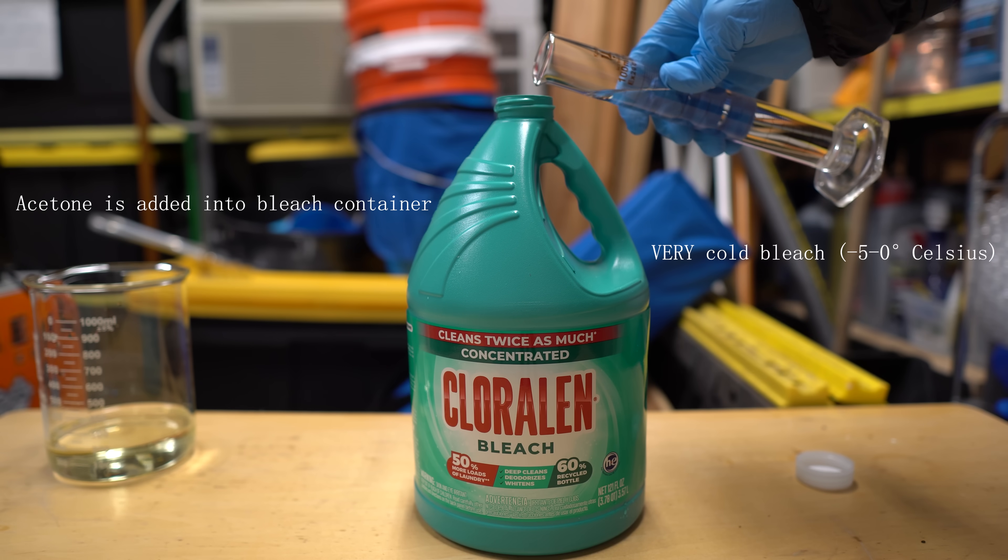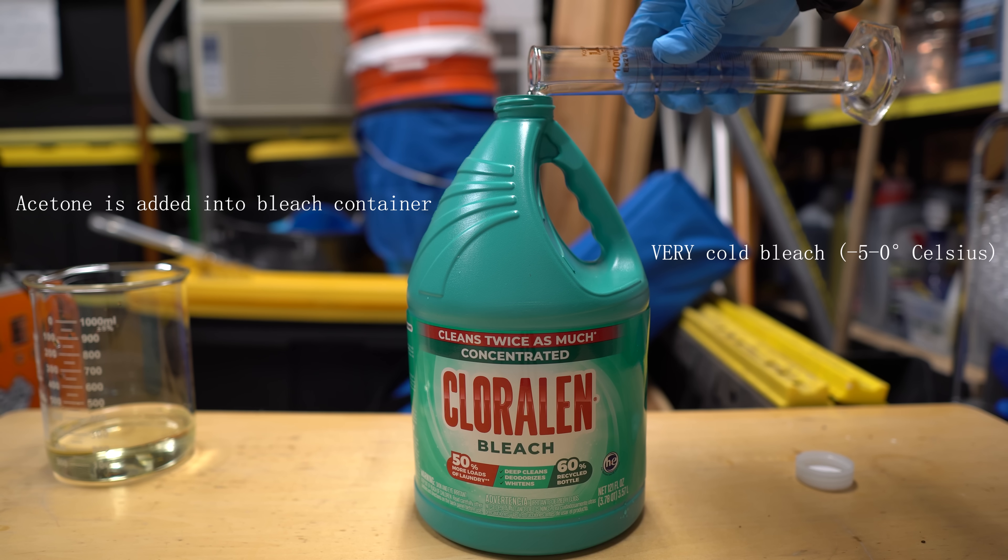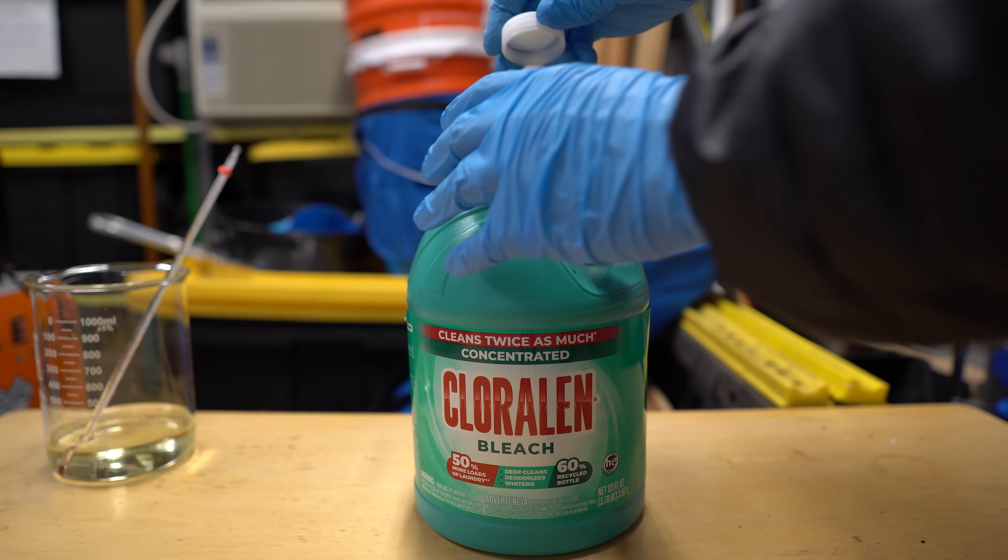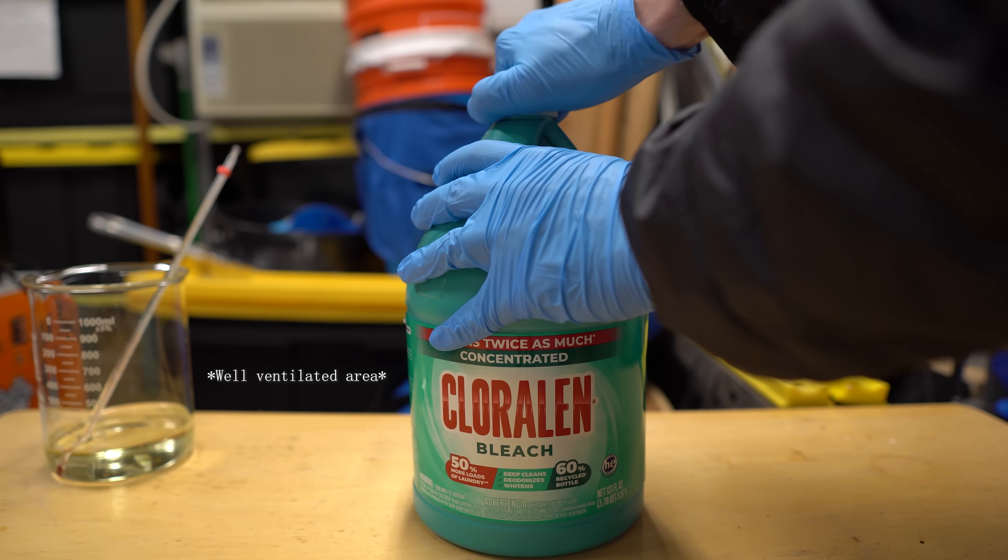Another important thing is you're going to want to chill your bleach to a very low temperature, maybe around negative 5 to 0 degrees Celsius. This is because the reaction between acetone and bleach is very exothermic and it will release a lot of heat. In case you don't understand, heat equals bad. The cap is put on, and everything is shaken around to mix all of the solution together.